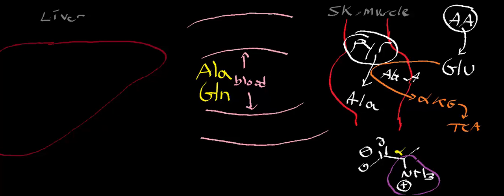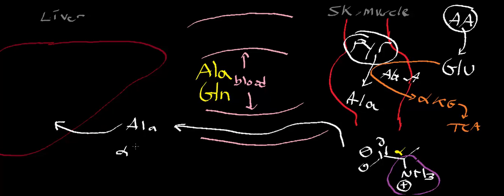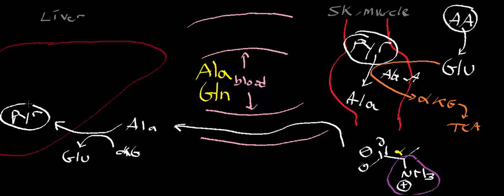Alanine can move through the blood and goes to the liver. Effectively, the liver is going to reverse this transamination process. We have alanine coming in, alpha-ketoglutarate is required, and what comes out is glutamate along with pyruvate. This is again catalyzed by alanine aminotransferase. So alanine goes in the blood to the liver, and alanine aminotransferase there converts it back to pyruvate.